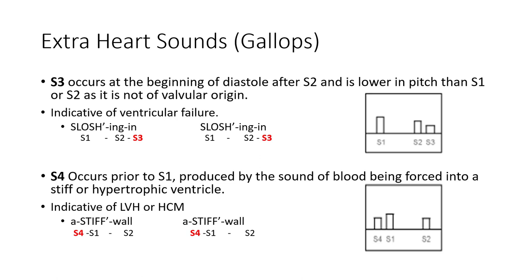We'll get into extra sounds and gallops - S3 and S4 sounds. These are extra sounds because it's not a splitting of S1 or S2, it's a completely additional sound. S3 is an extra heart sound that occurs right at the beginning of diastole - right after S2. It's a little bit lower pitched. It's indicative of ventricular failure or dilated ventricles, because in someone with heart failure or dilated ventricle, when blood enters the ventricle it's turbulent - the blood sloshes in creating turbulence. So we have our normal S1 and S2, and then an extra sound right at the beginning of diastole.